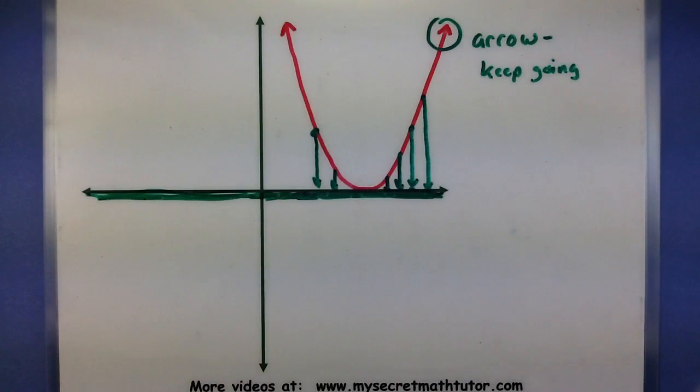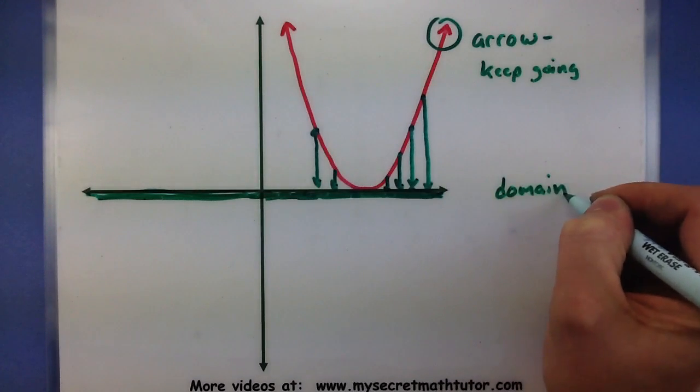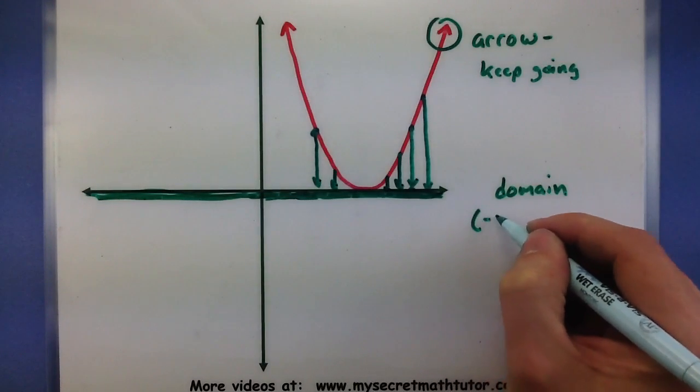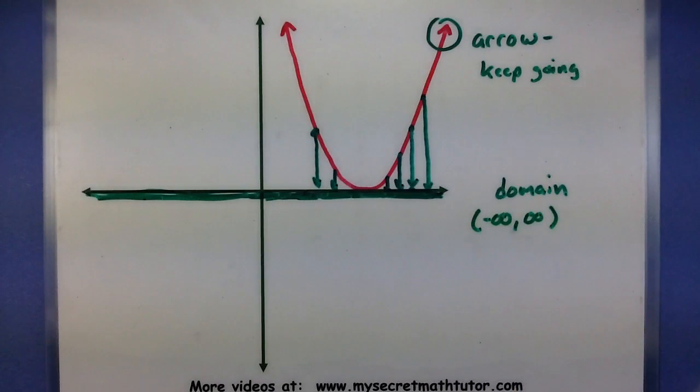If I look at all of the values that I've shaded in, this is how I can write out my domain. All my numbers between negative infinity to infinity have been shaded in, so that is my domain.